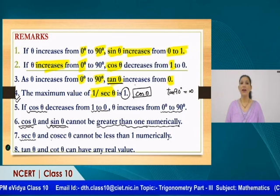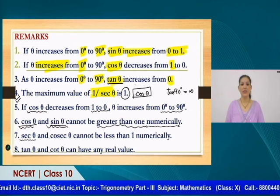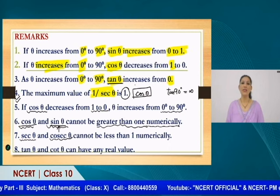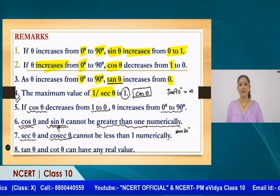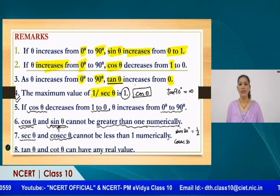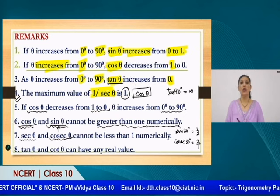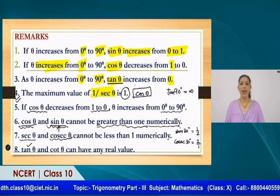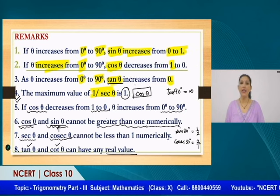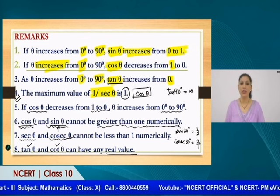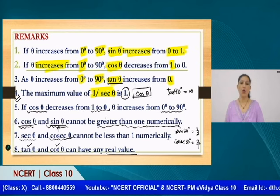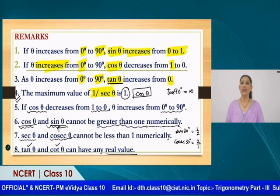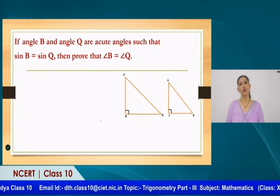Since sec theta is the reciprocal of cos theta, and cosecant theta is the reciprocal of sin theta, the values of these two are never less than 1. For example, sin 30° = 1/2, so cosecant 30° = 2/1 = 2, which is greater than 1. The value of tan theta and cot theta can be any real value — when you discuss angles outside 0° to 90°, which you will in Class 11, tan theta and cot theta can range from negative infinity to positive infinity.